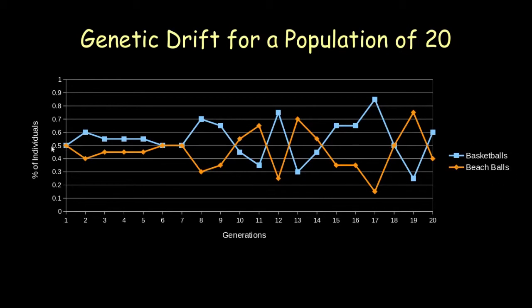As you can see, we start off with just half and half, and then the graph goes up and down randomly depending on each year and what traits are beneficial.